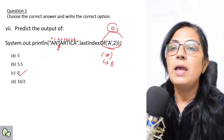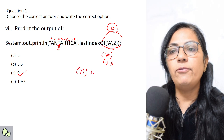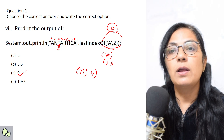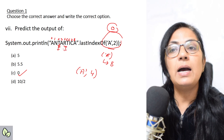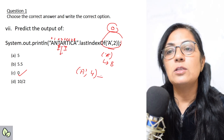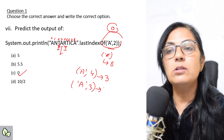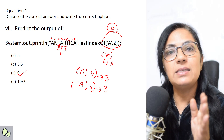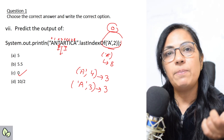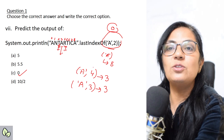For example, lastIndexOf('a', 4): at index 4 the character is 'r', and before that the last occurrence of 'a' is at index 3. So output would be 3. Similarly, lastIndexOf('a', 3) also returns 3. So with two arguments, lastIndexOf returns the last occurrence of the character from the beginning up to that index number.